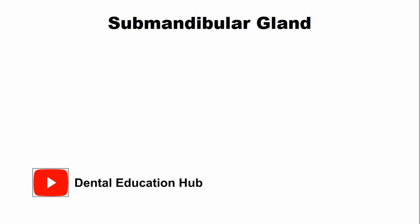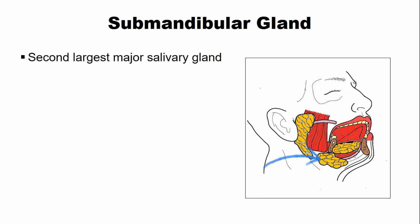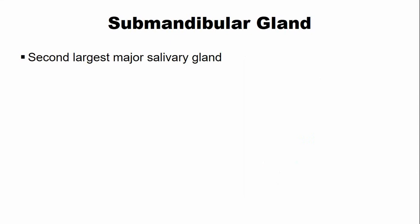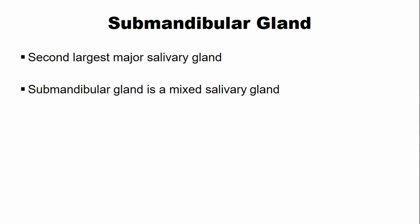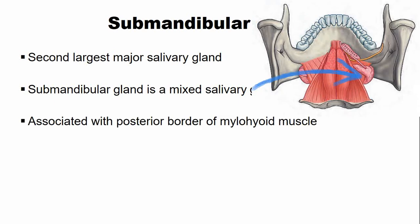The submandibular gland is also a paired major salivary gland and it is the second largest major salivary gland after the parotid gland. The submandibular gland is a mixed salivary gland, meaning it secretes both mucus as well as serous secretions — it has both serous cells and mucus cells. This gland is associated with the posterior border of the mylohyoid muscle, as you can see in this picture.